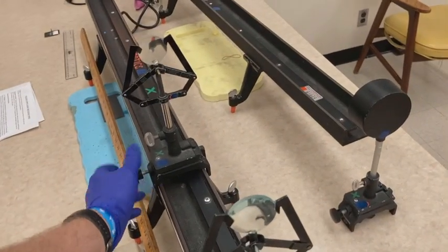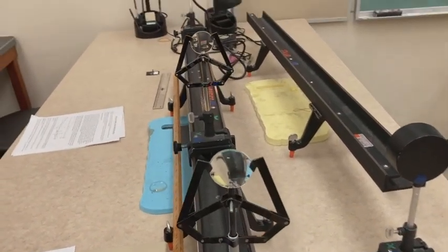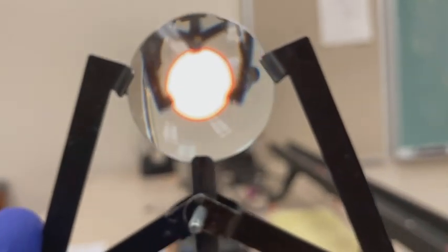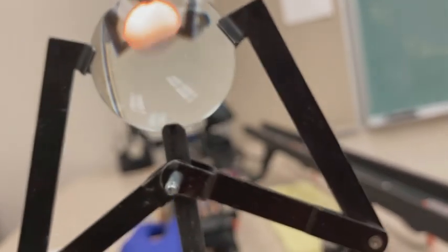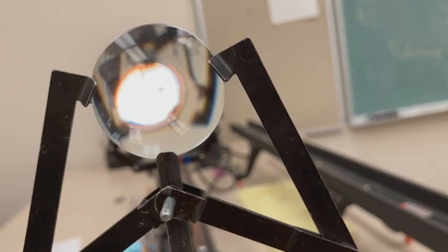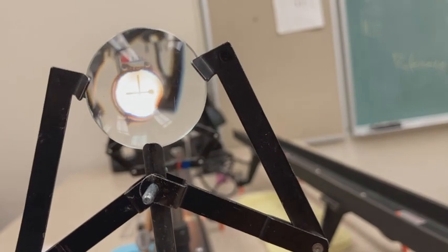I'm going to start out with the objective back a little farther than I need it to be, and I'm going to look through the lens—we'll see how well this works—at the light source. You bring this in closer, the objective lens, and we begin to see a clear image in there through the eyepiece.